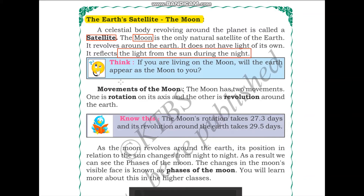Movements of the moon. The moon has two movements: one is rotation on its axis, the other is revolution around the Earth. Similar to how Earth rotates around the Sun, the moon rotates around the Earth. The moon's rotation takes 27.3 days and its revolution around the Earth takes 29.5 days.